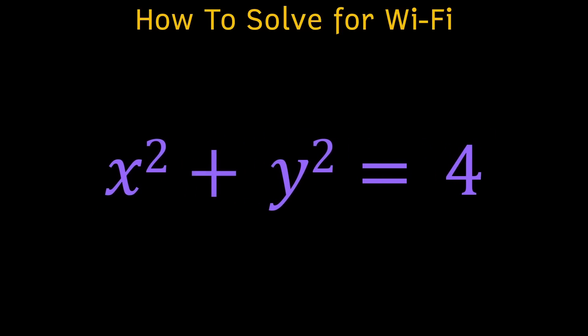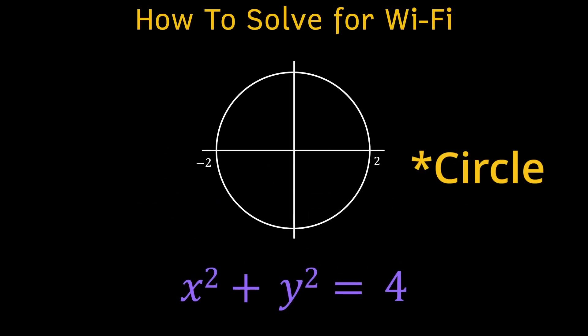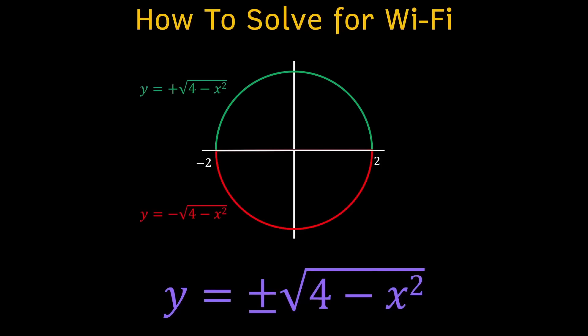Next, we group all of our variables on one side. This gives us the equation of a circle with radius 2. Then, to show it's only the top half of this circle, we solve for y by reversing what we just did.